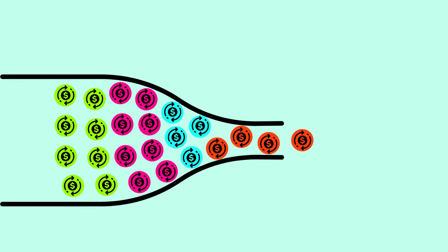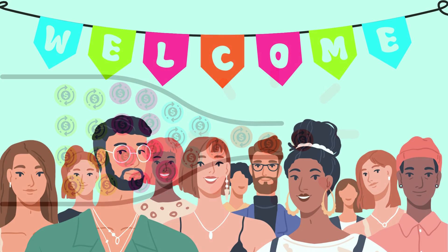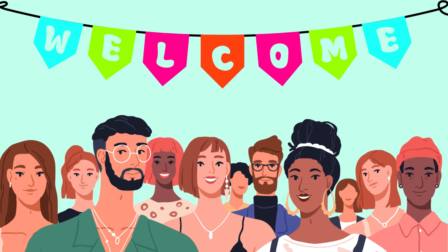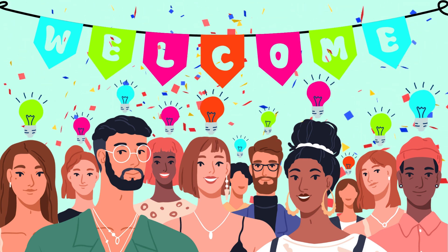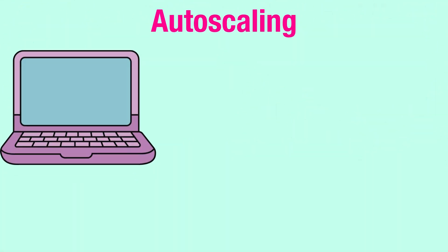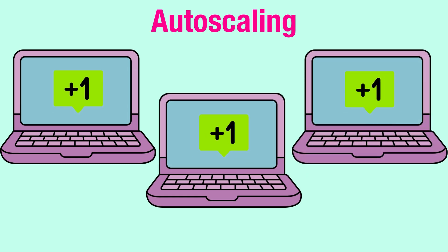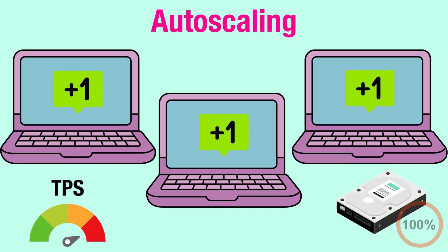Workload distribution prevents bottlenecks, sustaining high performance even as the network grows. Low entry barriers encourage community participation and innovation, enhancing the network's development. Autoscaling on Shardium allows each node to vote and decide whether to add, remove, or maintain the amount of nodes and achieve optimal network size based on the required TPS and storage demands. The network being capable of horizontal scaling is what facilitates this.